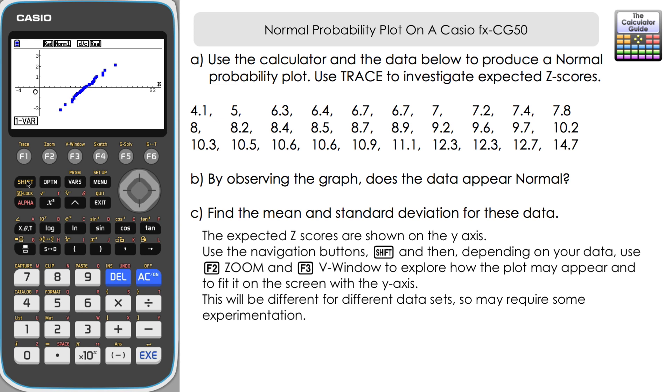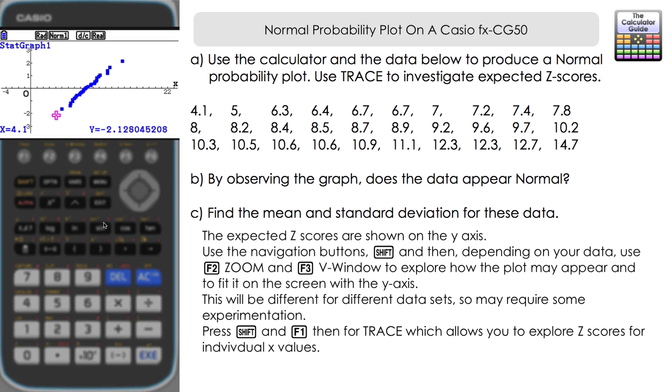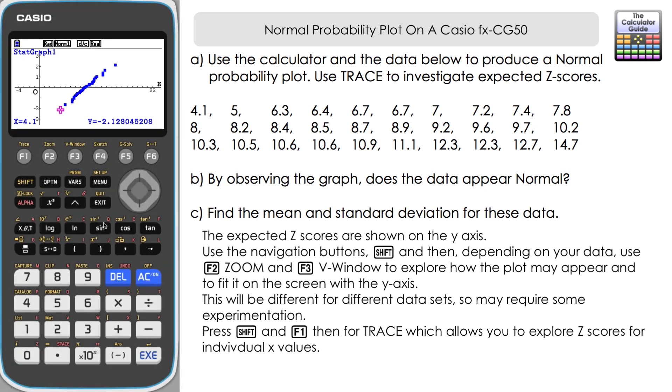The second part of part A is we need to use trace to have a look at some expected Z-scores. So if we press shift and F1 and you can see it is straight for the lowest X value 4.1 and it's given an expected Z-score of negative 2.128.